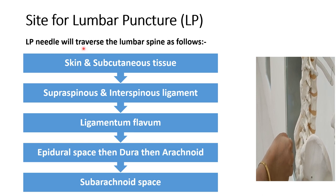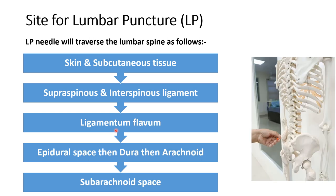The LP needle traverses the lumbar spine through the following layers: first skin and subcutaneous tissue, then the supraspinous and interspinous ligaments, then it pierces the ligamentum flavum — at which point a 'pop' feeling will be felt — then it traverses the epidural space, then the dura, then the arachnoid, and then it enters the subarachnoid space from where CSF will flow.